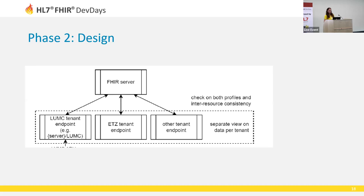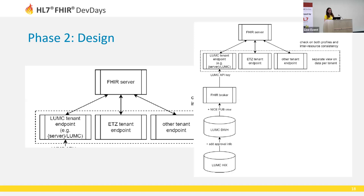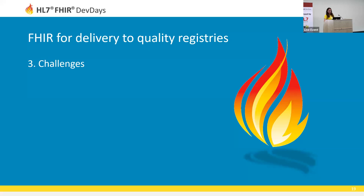The design we are now thinking about has a central FHIR server which is multi-tenant, so each participating ICU will have their own endpoint, and how they send data to that endpoint they can decide for themselves. For example, we are talking with a Dutch university hospital that already has a data platform storing data according to the Dutch national FHIR profiles, and we will add either a FHIR broker or a FHIR facade server on top of that and then send it to the central FHIR server.